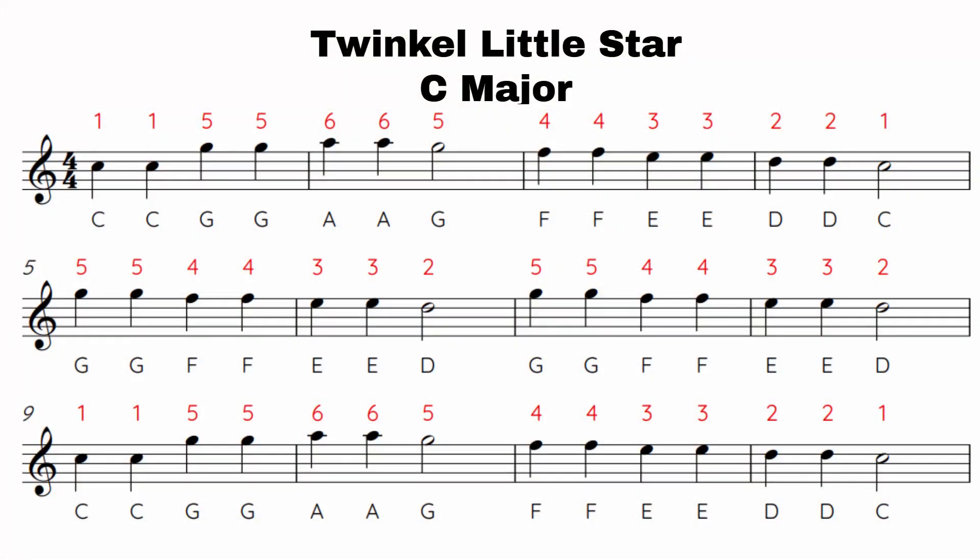So last week we learned how to transpose the melody into a different scale by using the same scale degrees. The example we used last time was Twinkle Twinkle Little Star, where we took the first phrase, which is 1 1 5 5 6 6 5, and then you can choose another scale and give it its scale degrees.